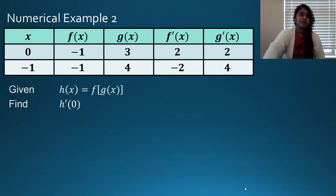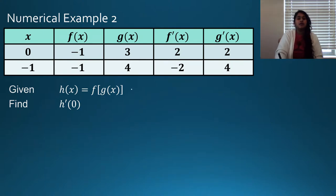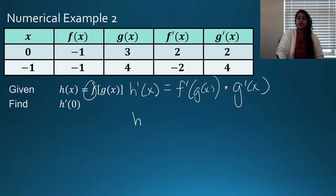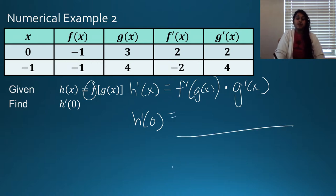Now I have another one — I hope you work on this yourself. H prime of X equals F prime of G of X, times G prime of X. So take a moment to solve H prime of 0, plug it in, and figure it out. Pause, and here's your answer.